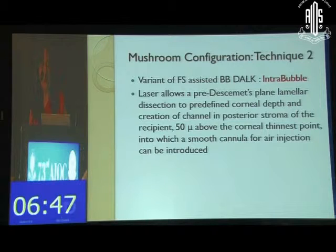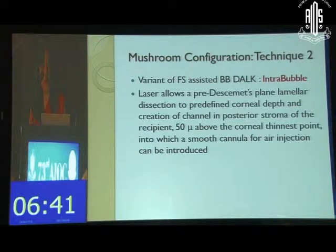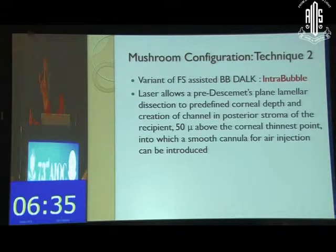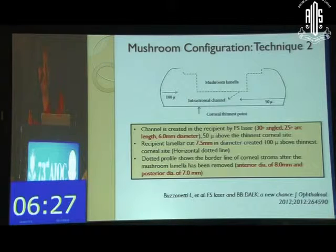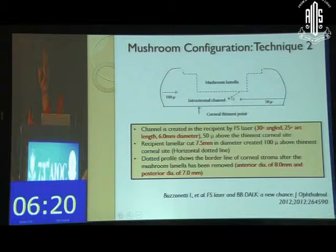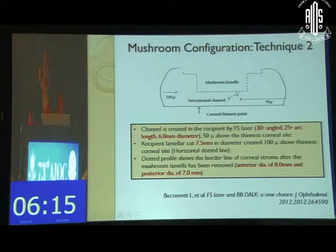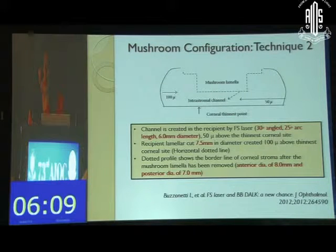The variant of femtosecond-assisted big bubble DALK is called the intra-bubble technique. It allows a pre-Descemet's plane lamellar dissection to pre-define corneal depth. A channel is created in the posterior stroma 50 microns above the corneal thinnest point, at a 30-degree angle with a 25-degree arc length at 6 mm diameter, so that a smooth cannula can be inserted.